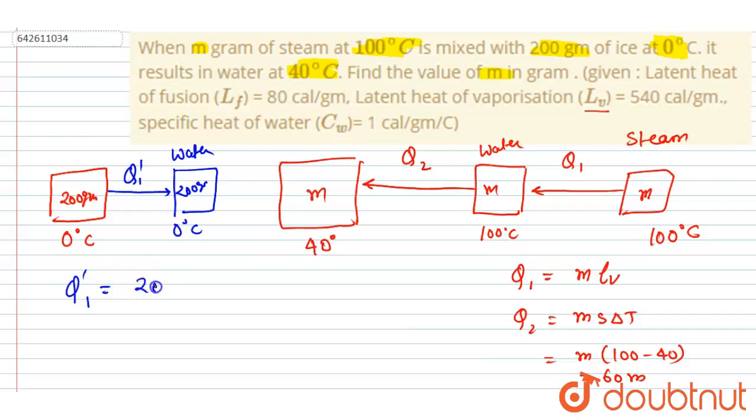So it will be 200, that is the mass of the ice, into the latent heat of fusion, that is 80. So we know that the latent heat of fusion and latent heat of vaporization.